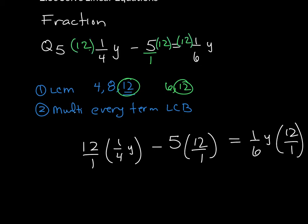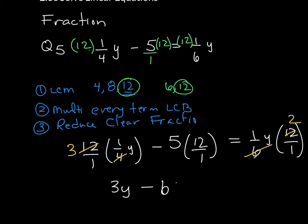Now, what we're doing with all of this, I just wanted to write it so I can reduce easily. We're going to reduce. And that third step is now reduce and clear fractions. So I know that 4 goes into 12 three times. There's nothing to reduce over here. And 6 goes into 12 twice. So let's see what we're left with. 3y for the first term minus 5 times 12 is 60. And over here, I just have a y times 2. So that is 2y.